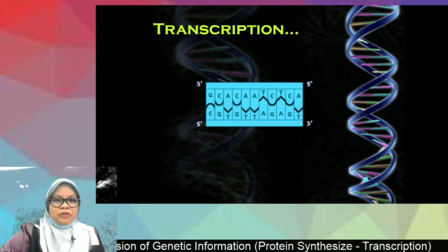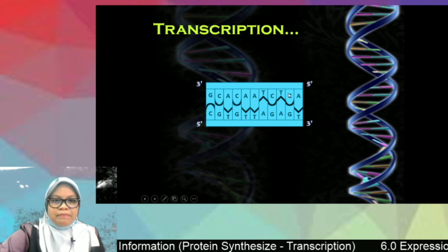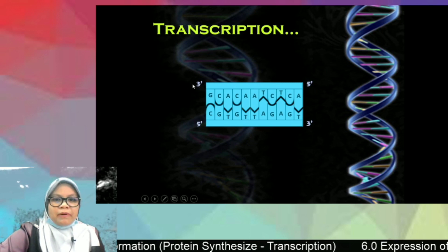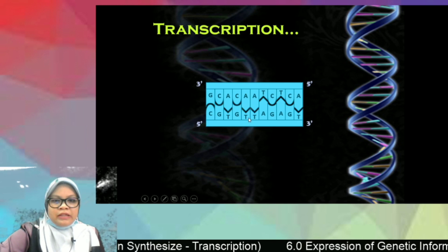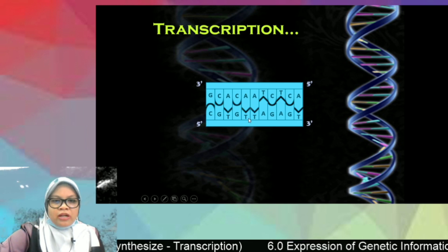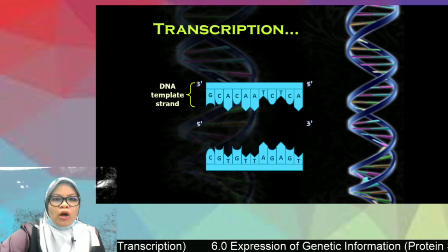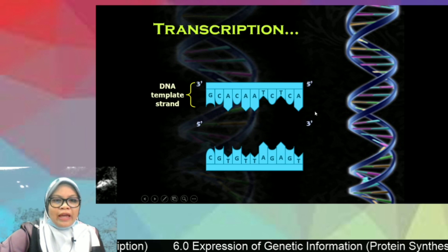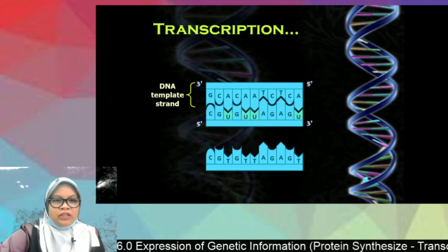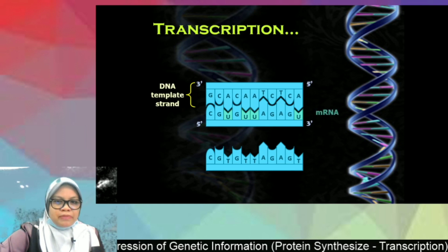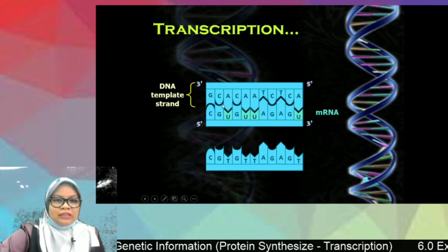Here we see a DNA double strand which is anti-parallel — three prime to five prime on one strand, and five prime to three prime on the other. This DNA double strand will separate, and one DNA strand will act as a template in transcription. The mRNA produced is complementary to the parental strand.